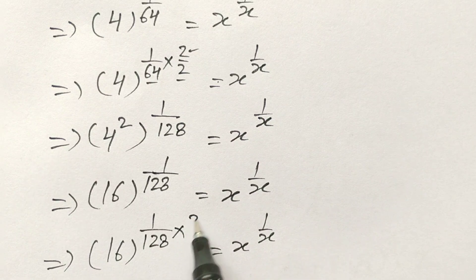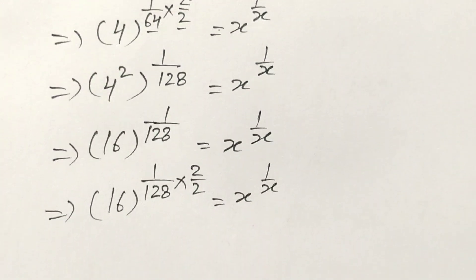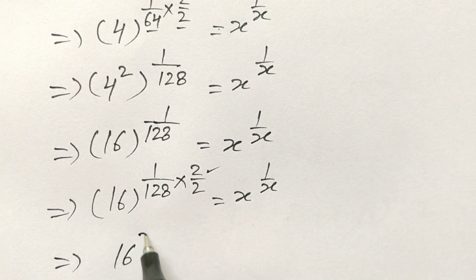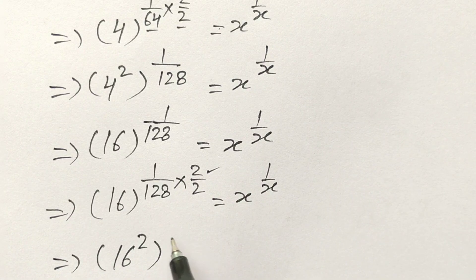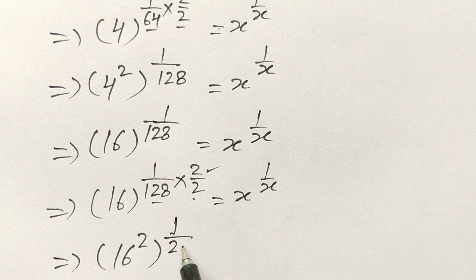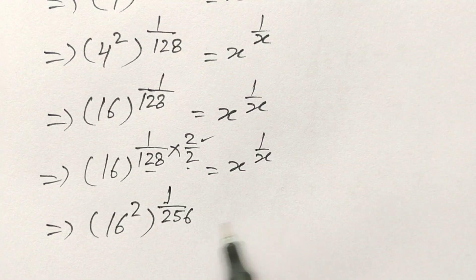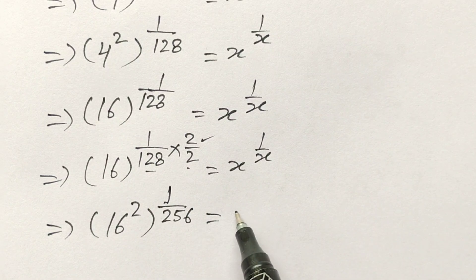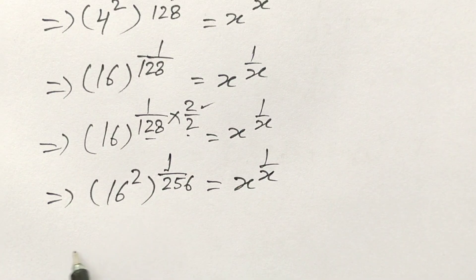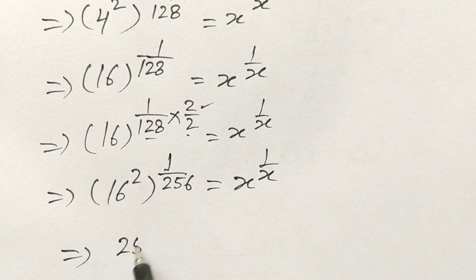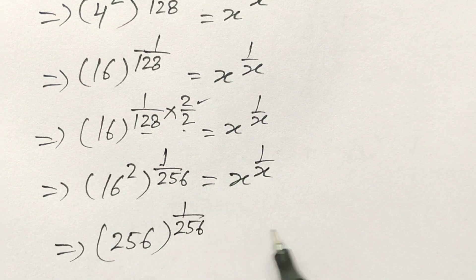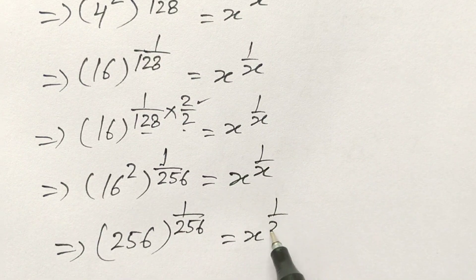If we again multiply by 2 over 2, in the next step: 16 squared is 256, so 16 to the power 2 over 256 becomes 256 to the power 1 over 256, and this is equal to x to the power 1 over x.